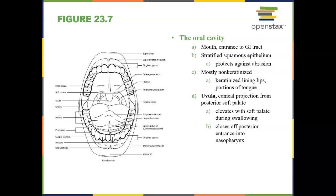Welcome back. We're going to start in on the oral cavity. The oral cavity, or the mouth, is the entrance for the GI tract, and it is composed of stratified squamous epithelium that is non-keratinized. There are portions of the oral cavity that are keratinized — portions of our tongue are keratinized, and our lips are keratinized.